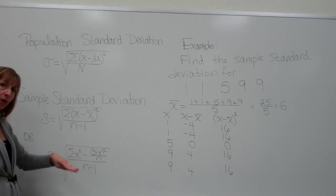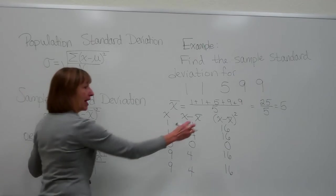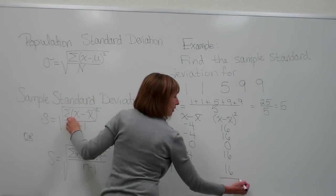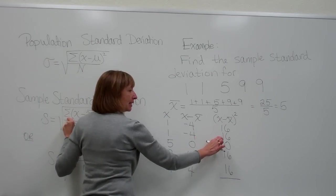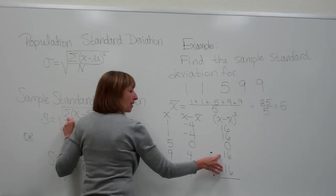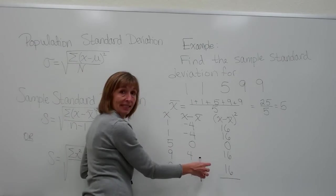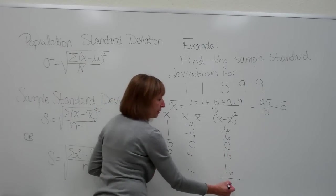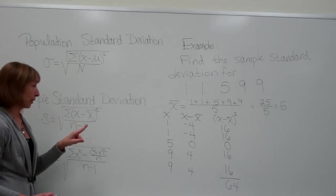So far we've done each of those parts of taking each number minus the sample mean and squaring it individual number by individual number. Next up, we want to add up those values that we got. So when I add these up, 16 plus 16 is 32, and I have another 32 here. So 32 plus 32 is 64, plus 0 is still 64. So that gives me that numerator.